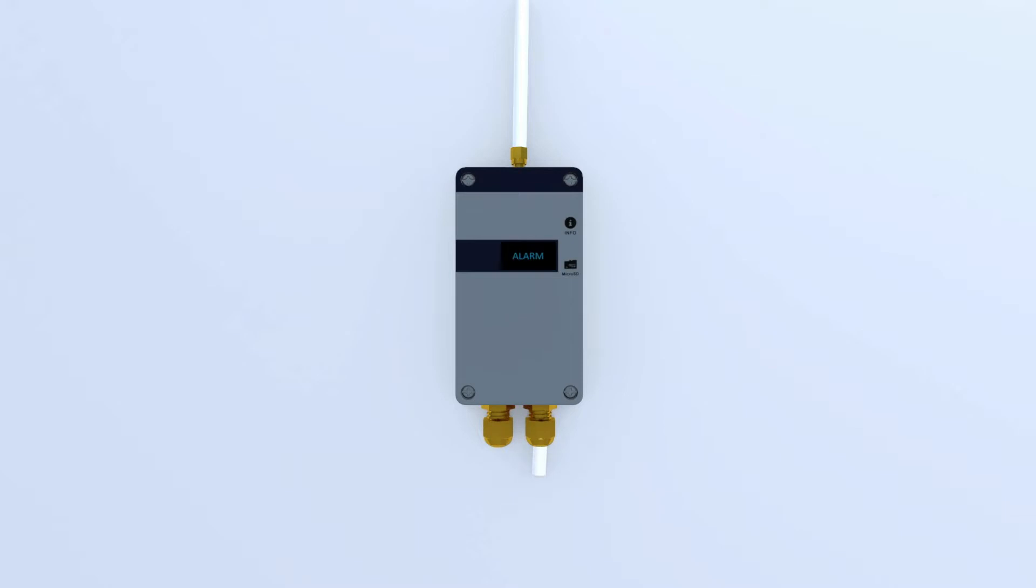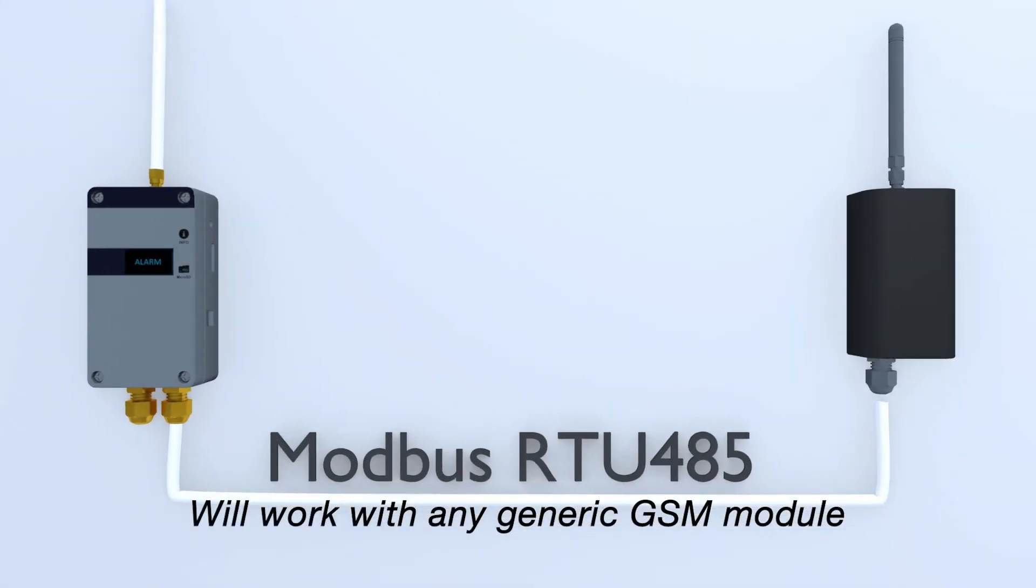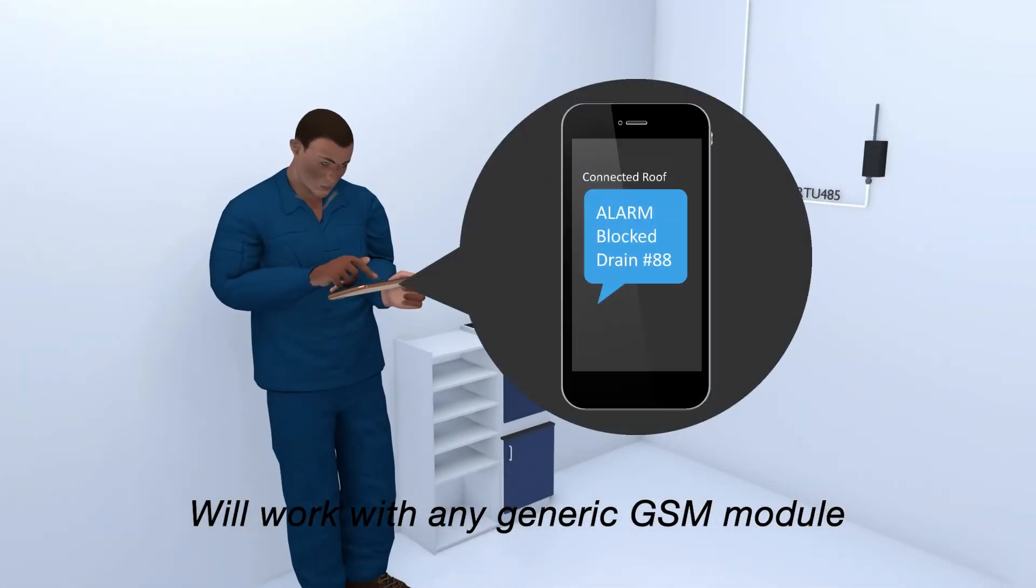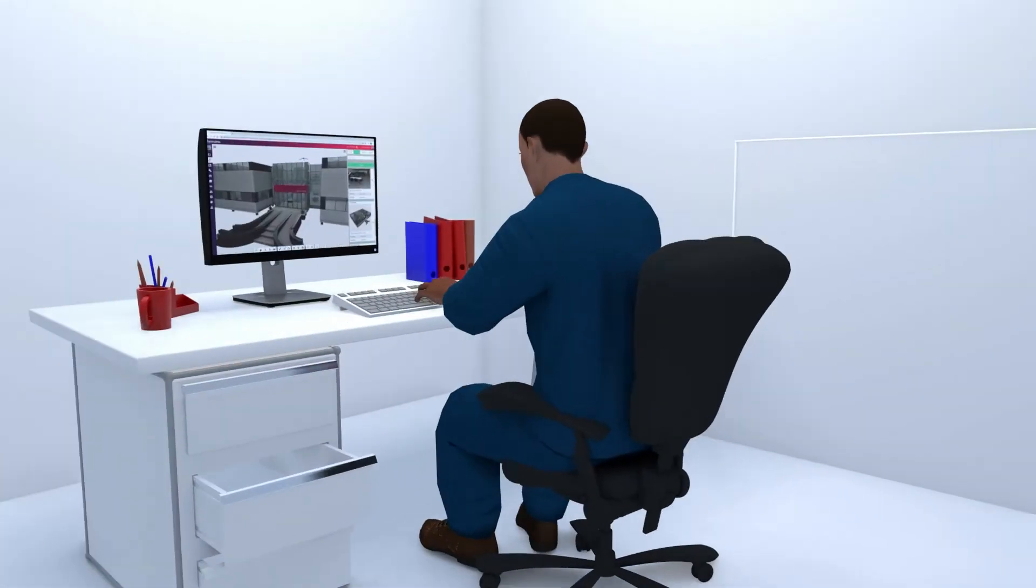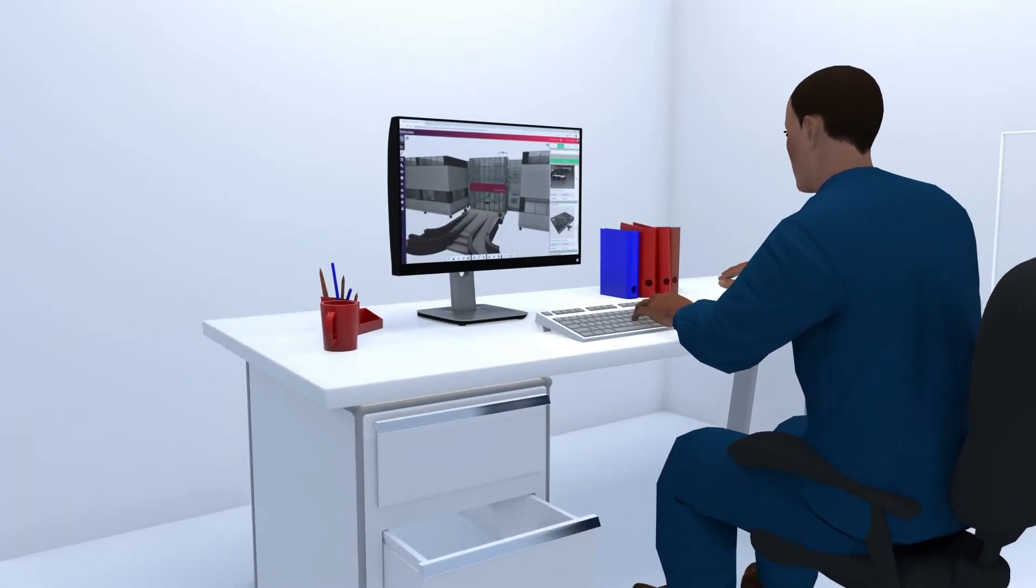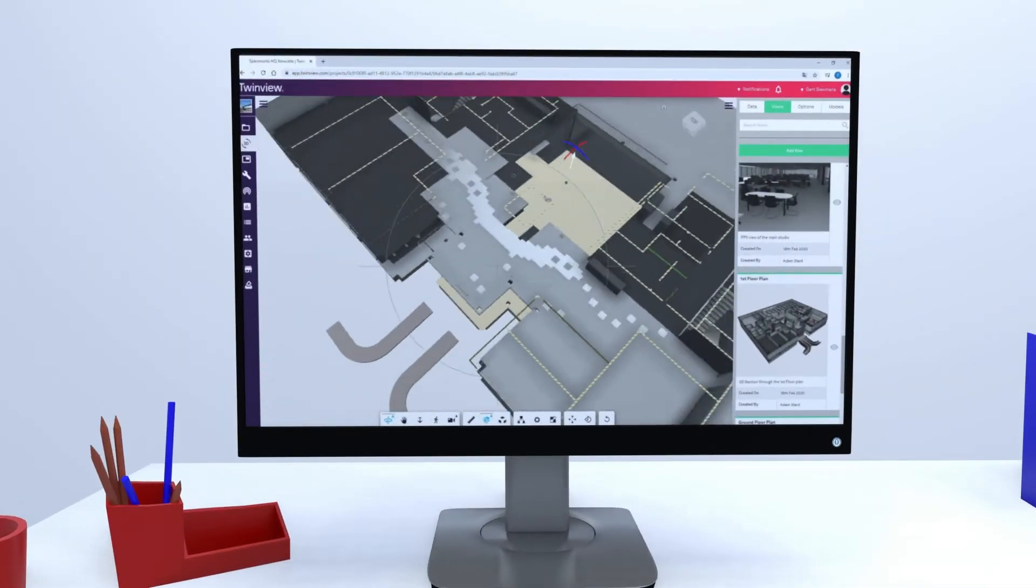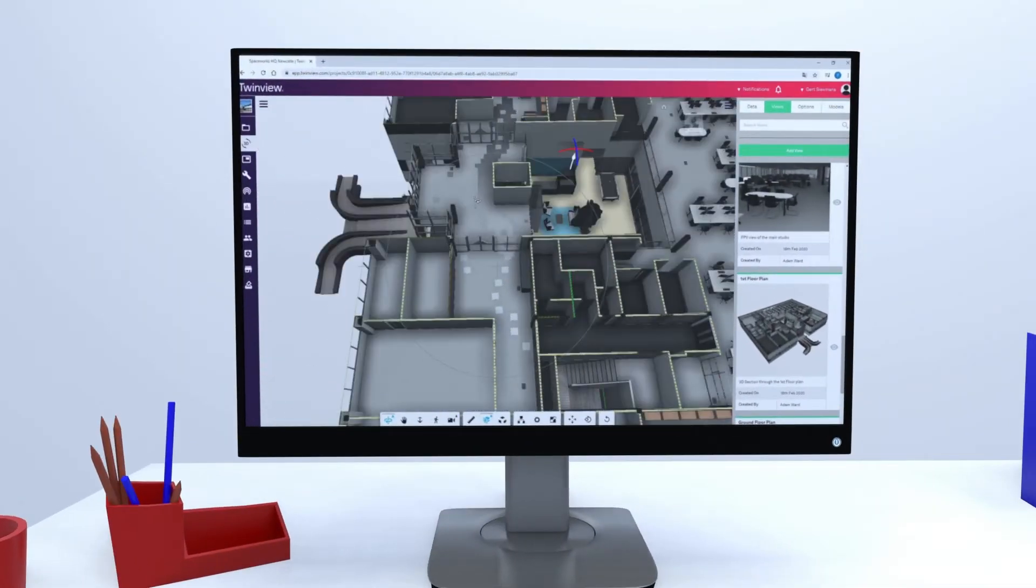Or via Modbus, you can connect a GSM module to receive warnings via text messages on your phone. Modbus also gives you the opportunity to feed your building management system with data to get a full overview.